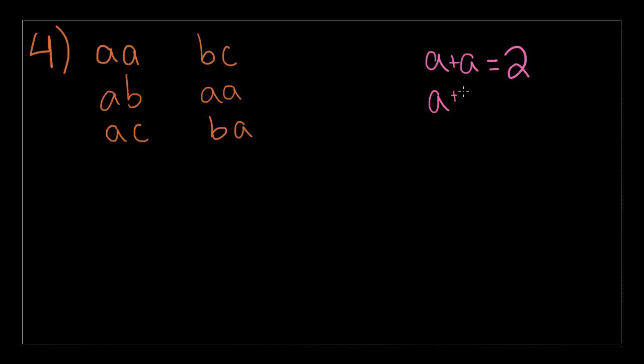Now we'll move on to number 4. There are sets of variables: AA, AB, AC, BC, AA, and BA. In the six pairs of letters shown above, if A is paired with itself, the pair has a value of 2. If A appears in a pair with another letter, that pair has a value of 1. All other pairs have a value of 0. What is the sum of the values of these pairs?